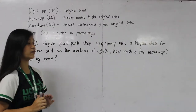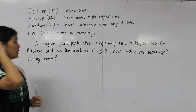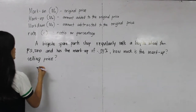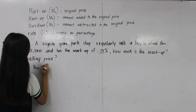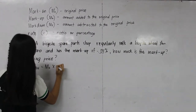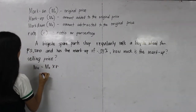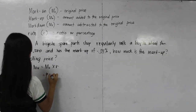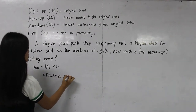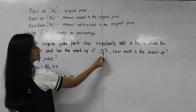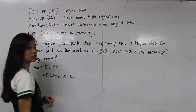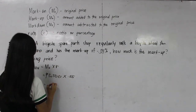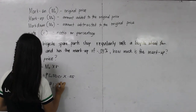What if we are given the rate and in the problem we need to find the markup and the selling price? The markup, if the rate is given, uses the formula: original price times rate. So our markup is 5,500 pesos times 0.25 — because 25% means you move the decimal two places back. The answer would be 1,375 pesos. This is your markup when the rate is given.